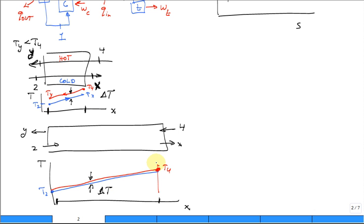So, in theory, the exit temperature for the hot could be as low as T2, the inlet temperature of the cold. And the exit temperature of the cold could be as high as T4, the inlet temperature of the hot. That's a tongue twister, isn't it?